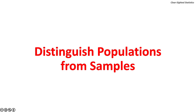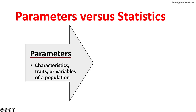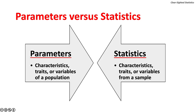Let's distinguish populations from samples. A population contains all the items of interest. A sample, on the other hand, contains some of the data from the population. Parameters are characteristics, traits, or variables of a population. Statistics are characteristics, traits, or variables from a sample. On most occasions, the discipline of statistics analyzes sample data.